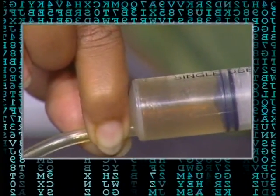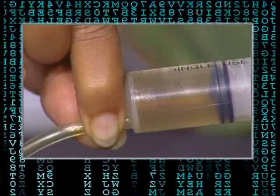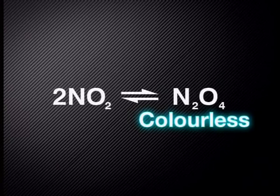The color has changed to a lighter brown, almost colorless. This is because the dinitrogen tetroxide is a colorless gas. Rahim, was your hypothesis correct? Yes, it was. If we look at the equation, the forward reaction was favored because the color went lighter.